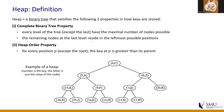So a heap must be a CBT, a complete binary tree. The second requirement is the heap order property: for every node except the root node, the key at that node must be greater than its parent. This is the definition of a minimum heap. There is another kind called a maximum heap, in which the parent is always greater than its children. But if you understand the minimum heap, the maximum heap is just the opposite. For this unit, let's focus on minimum heaps.